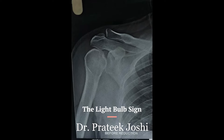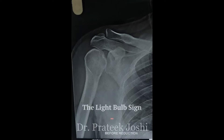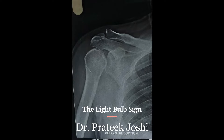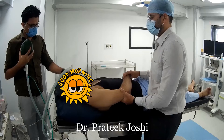AP view of the shoulder x-ray shows classical light bulb sign. Our patient fell down from a two-wheeler and sustained posterior dislocation of the right shoulder. We are going to reduce this shoulder by gradually forward flexing the internally rotated and adducted shoulder till we reach the level of the shoulder, and then will gradually externally rotate the shoulder to reduce the dislocation.